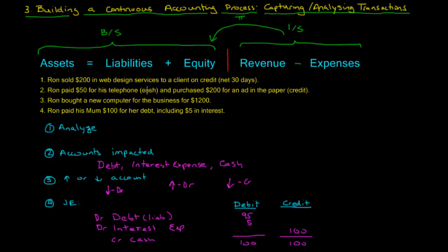That's how you create and capture the various journal entries. At the end of the day, you'd have a whole list of journal entries in a register for each transaction. In the next session, we're going to cover how to take each one of these items and track them in the various buckets — and we'll introduce the concept of T-accounts. Thanks for watching.